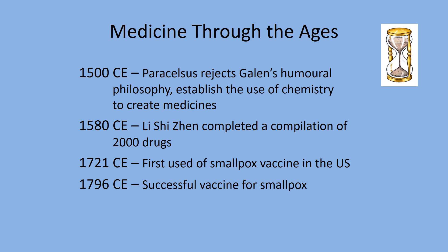Paracelsus rejected Galen's humoral philosophy. Since chemistry information was available through the alchemists, he suggested that we try to synthesize or create our own compounds and use them as medications. In China at this point, we're up to 2,000 drugs.